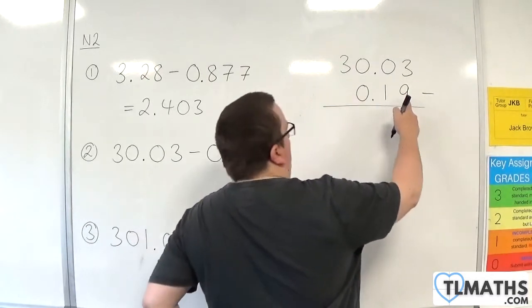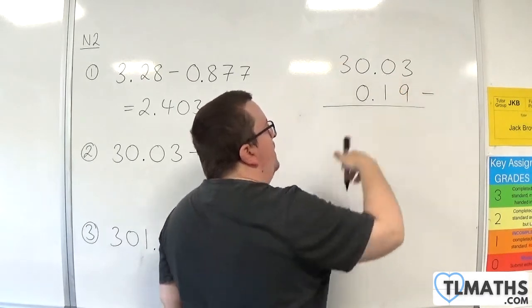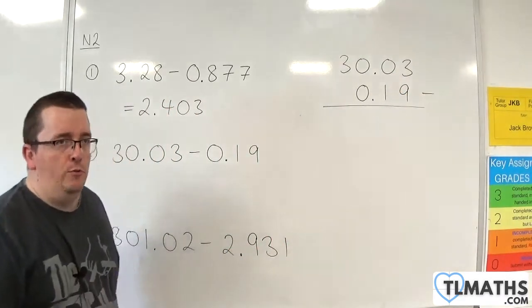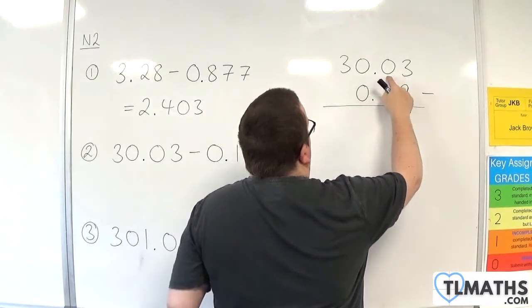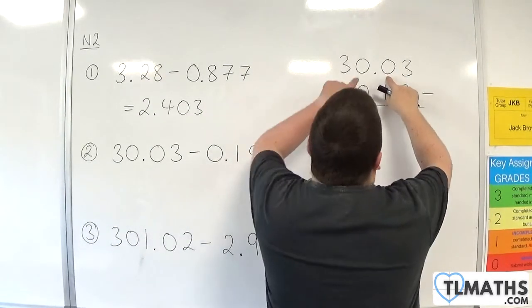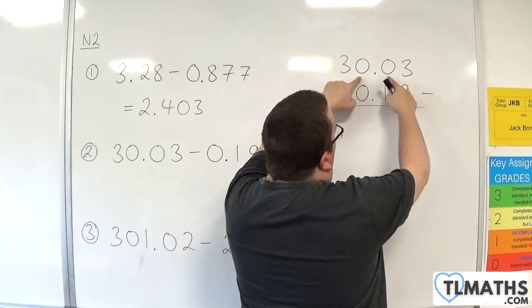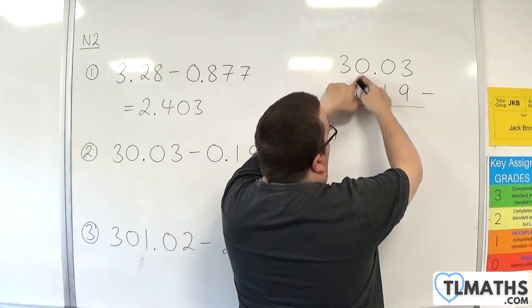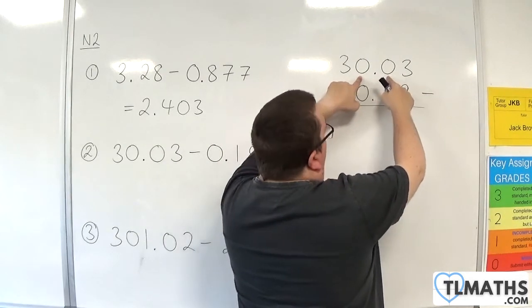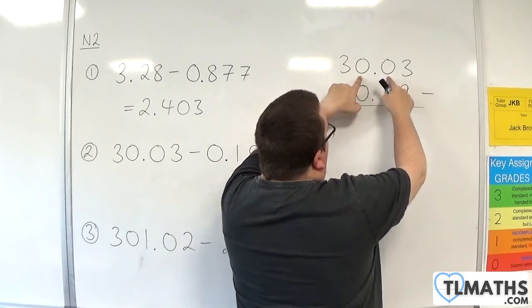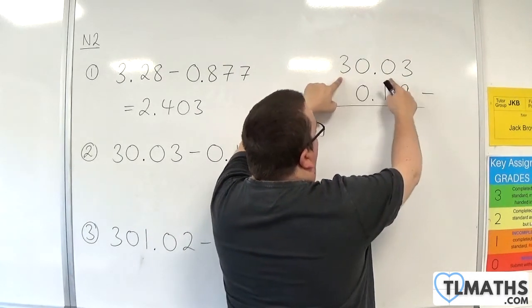3 take away 9, we can't do. So we need to borrow 1 from the 0. However, there are no 1's to borrow. So now you need to think of it as bringing in the next term along and then borrowing 1 from that. But the problem is that we've got 0, 0, and borrowing 1 from that will still have a problem. We've got none to borrow. So we then need to bring in the next term along, and think, okay, I've now got 300.